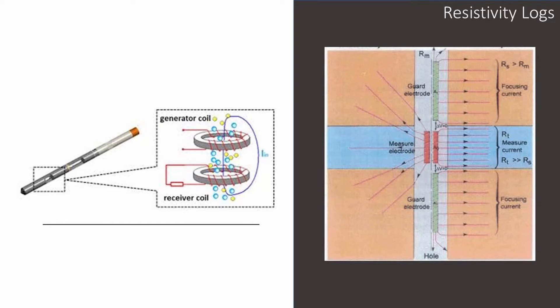Resistivity logging instruments generally use probes to generate an electric current between the borehole and the surface. The instrument then measures the electrical resistivity, or the ability of the formation to withstand the flow of electricity between two points. Similar tools induce a current within the formation to measure conductivity, which is the inverse of resistance.